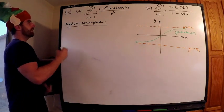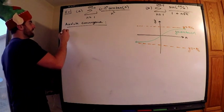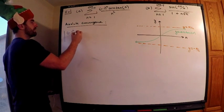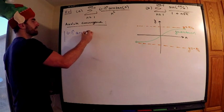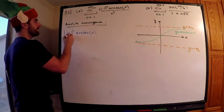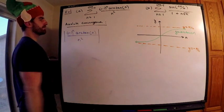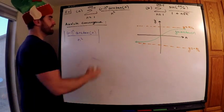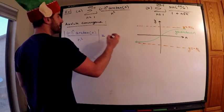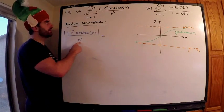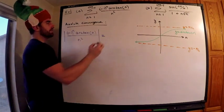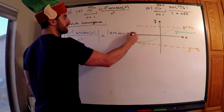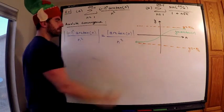So I can say the following: the absolute value of negative 1 to the n arctan of n divided by n squared. What is this equal to? Well, the negative 1 disappears. Negative 1 to the n, right? So this is n squared is positive for n greater than or equal to 1. So this is really just the absolute value of arctan of n divided by n squared.